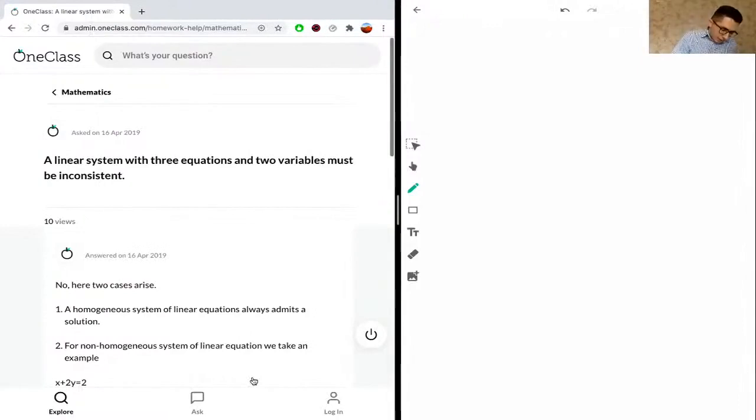We can start off conceptually. If we have two variables, let's say these variables are x and y, and we have three equations, it could be any equation in the form of y equals mx plus b. These are different variations of those equations that are given to us. It's asking if we're given three equations and two variables, is the solution always inconsistent, because it says must be inconsistent.